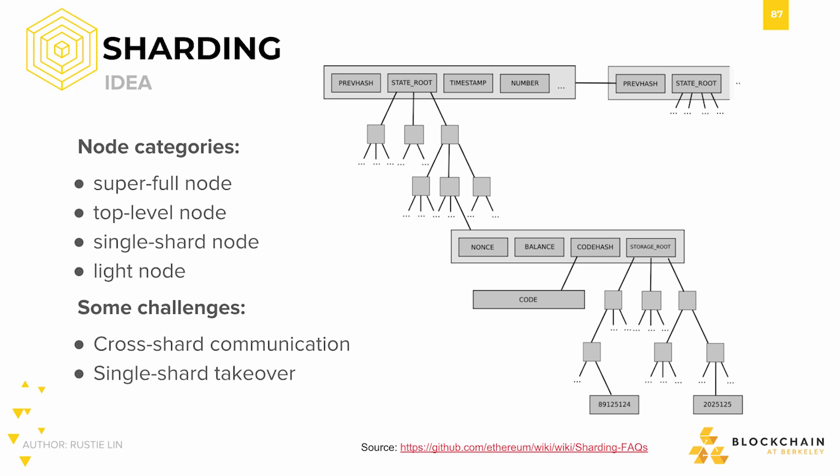Fundamentally, there are now several layers of nodes that can exist within a system that uses a sharded blockchain. Within Ethereum research, they split nodes into four categories: super-full nodes, which store data from all chains; top-level nodes, which process all main-chain or top-level blocks, giving them light-client access to all shards; single shard nodes, which store only information from a single shard; and of course, your average user, who is a light node, tasked only with downloading and verifying block headers of the main chain. With the separation of data and responsibility, there are many new challenges to face when it comes to sharding.